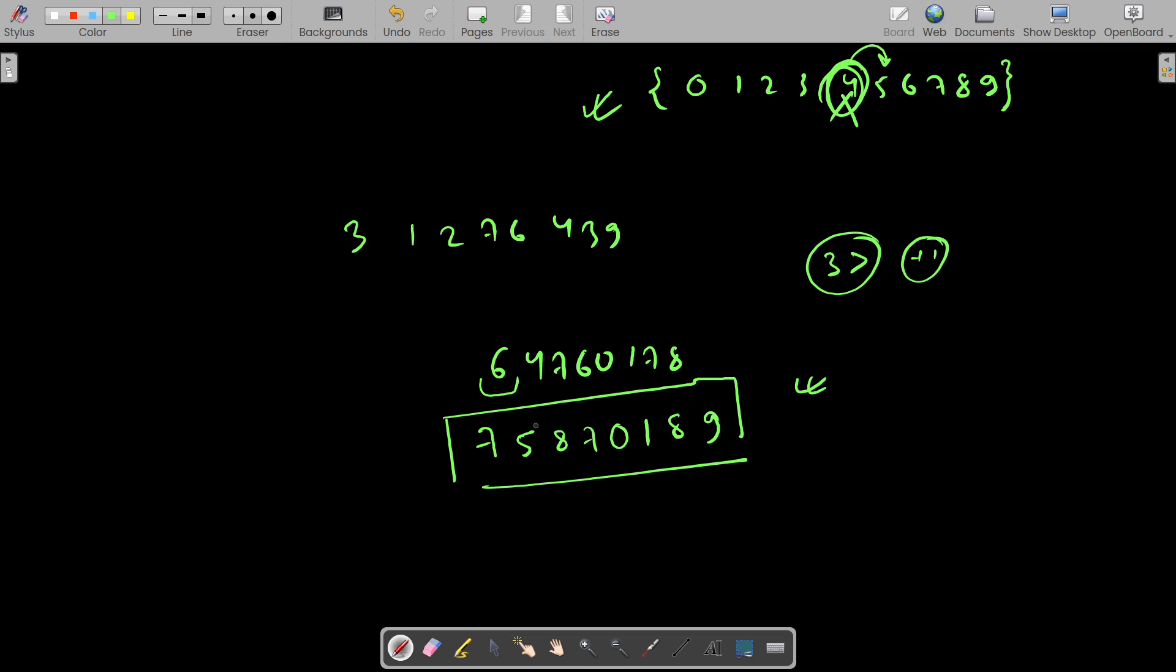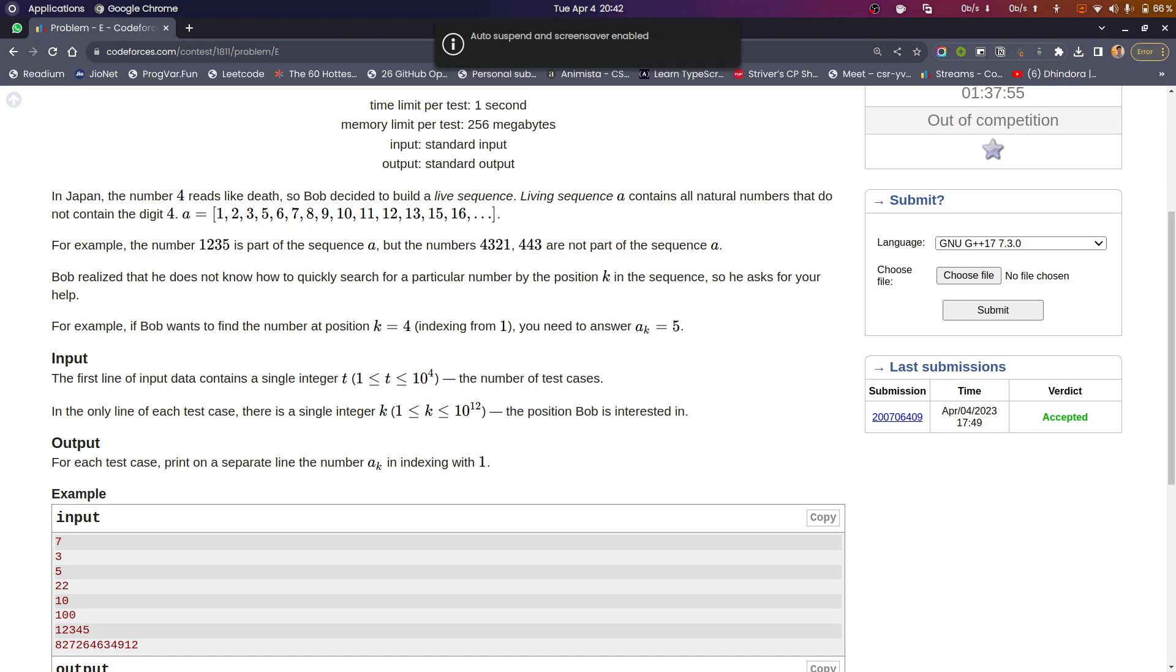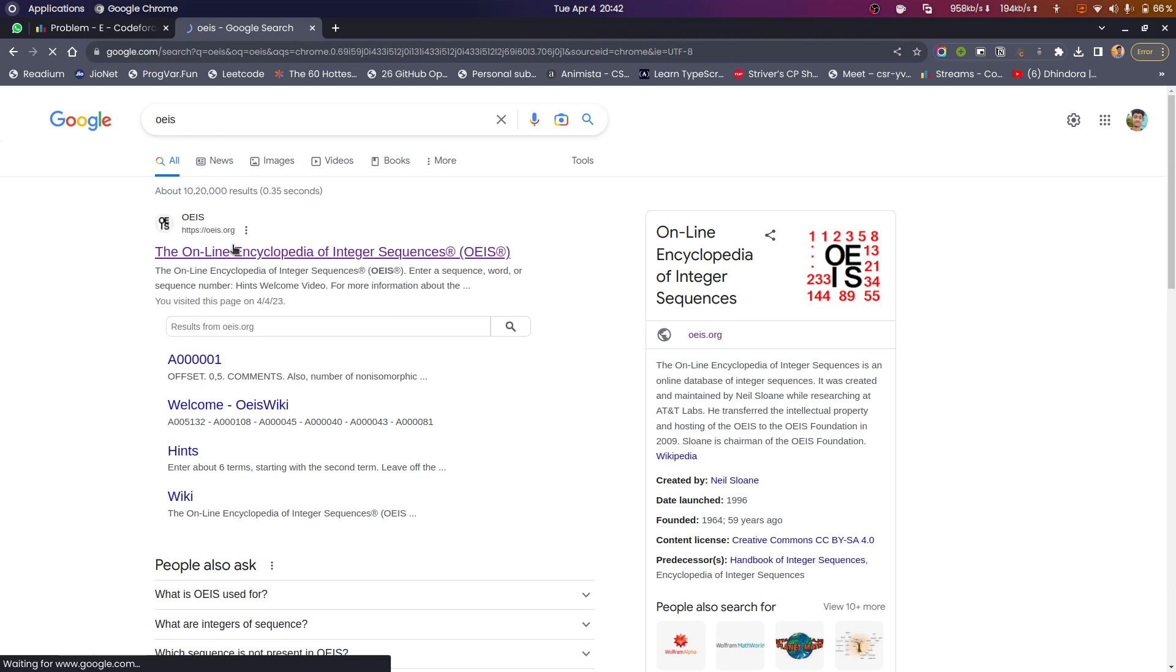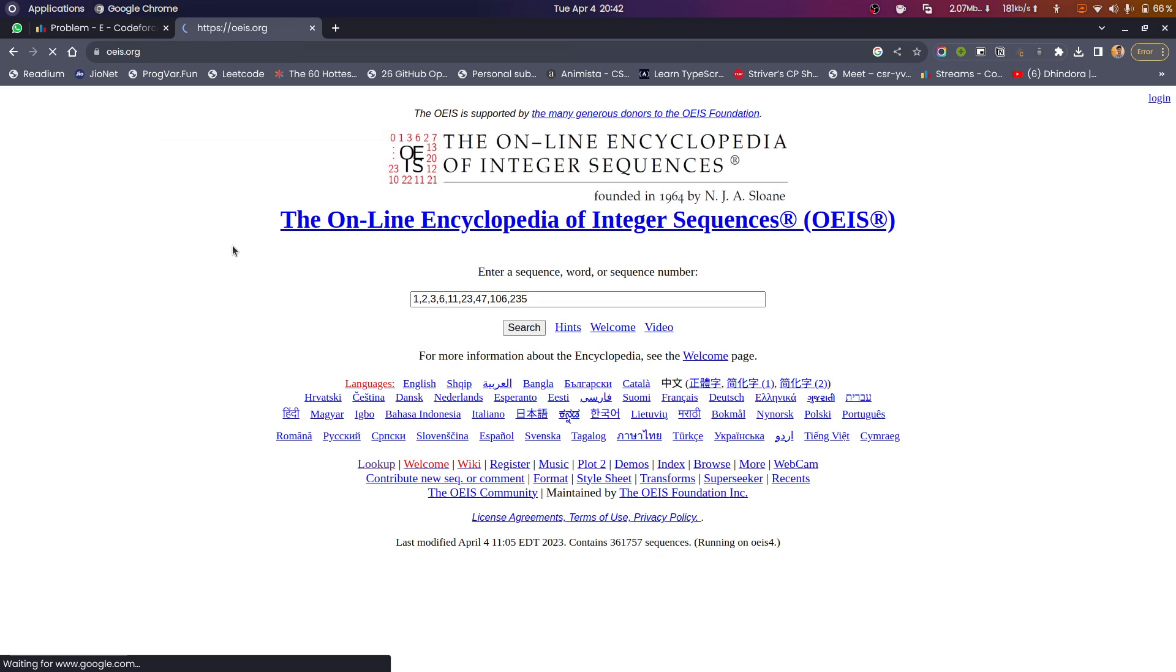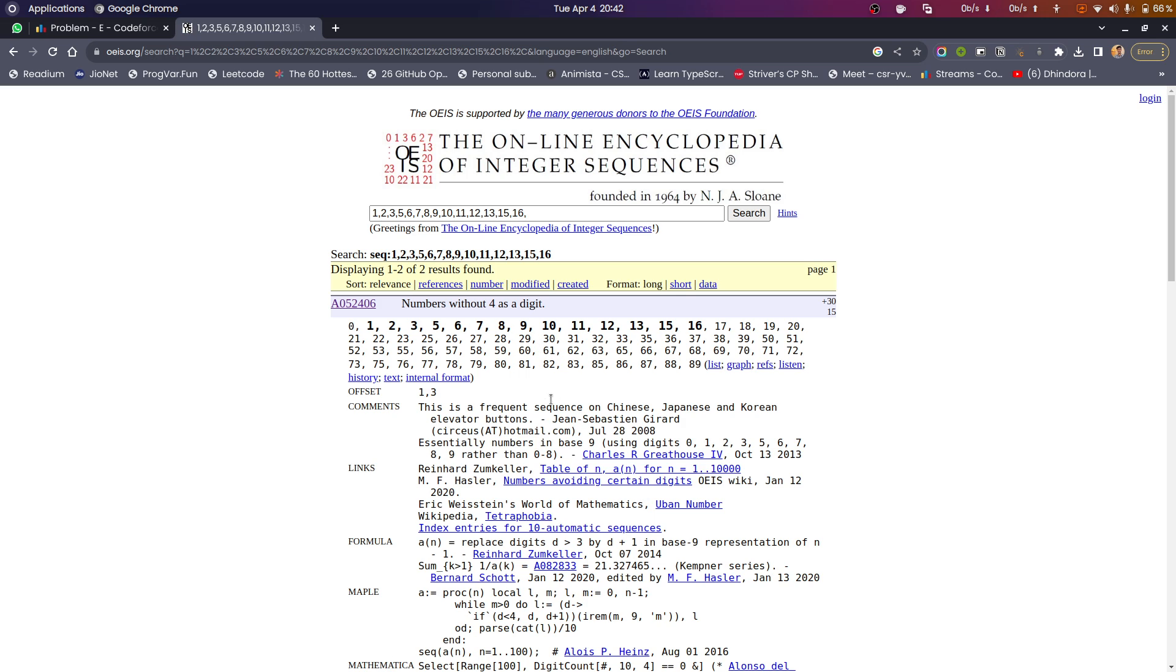So what I did first is I took the sequence and copied it. It wasn't very easy for me to understand what was happening, so I copied this sequence and I went to OEIS website, and after that I pasted my sequence here. And what I found out is this is a number without 4 as a digit, and here I found out replace digits d greater than 3 by d plus 1 in base 9 representation of n. I did the same thing and found the answer to it.